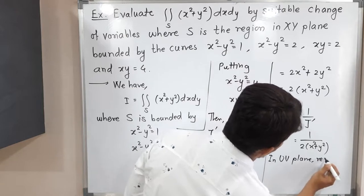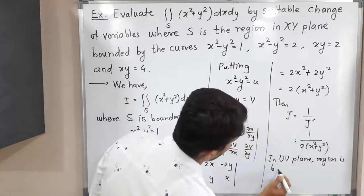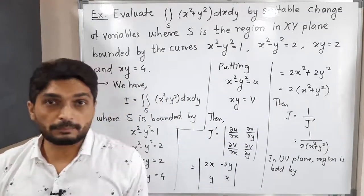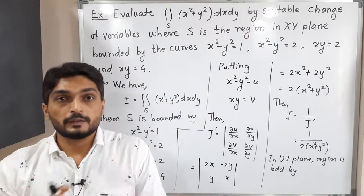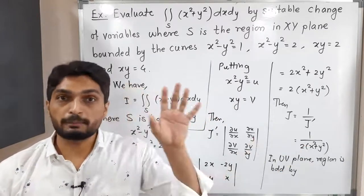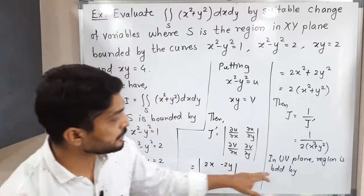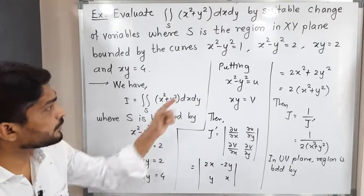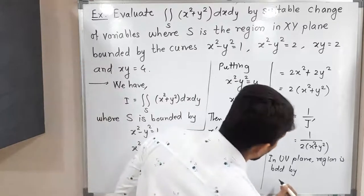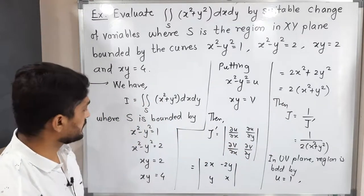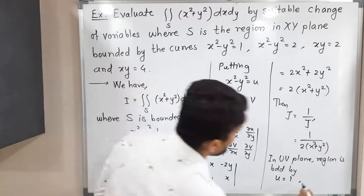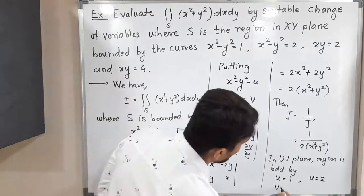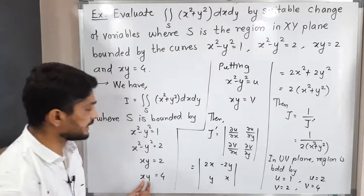Now, in the UV plane, we need to find the region of integration. The original problem is in the xy-plane, but with our substitution we are transforming the region into the uv-plane. Since x² - y² = u, the first equation becomes u = 1, and the second becomes u = 2. Since xy = v, the third equation becomes v = 2, and the fourth becomes v = 4. So the region in the uv-plane is bounded by these four lines.